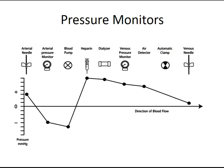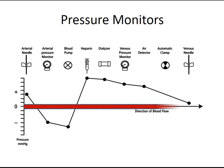The pressure monitors while blood is moving are continuously monitored: the arterial pressure monitor, the transmembrane pressure monitor, and the venous pressure monitor.